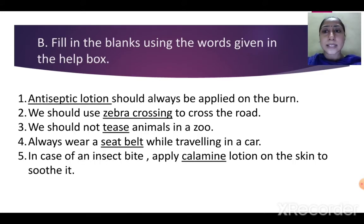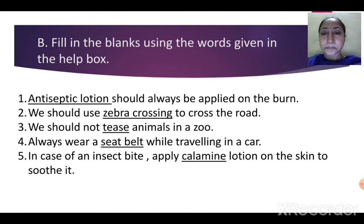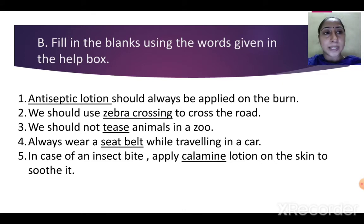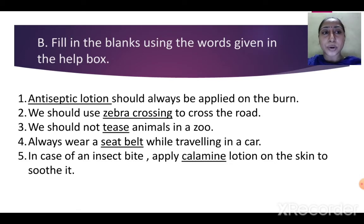Next exercise: fill in the blanks using the words given in the help box. The help box is already given in your book, so you have to choose the correct answer and complete the sentence. First one: dash should always be applied on the burns — the correct option is antiseptic lotion. So antiseptic lotion can be applied on the burns. Second one: we should use dash to cross the road — we should use zebra crossing.